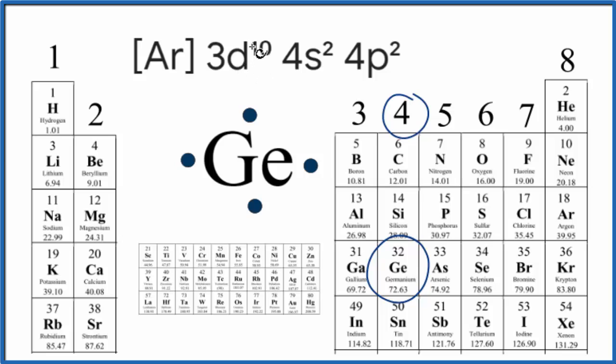For the d orbitals, when they have 10, they're very stable. So these electrons aren't going to be involved in bonding. But these ones right here would be involved in bonding. And if you count them up, you have two plus two, that gives you four, just like we found on the periodic table.